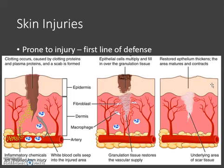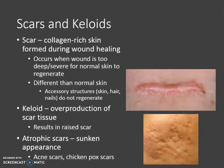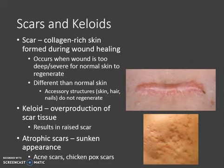Other times the scar is visible through the epithelium because the epithelium isn't able to fill in that area, and what you're actually seeing is the granulation tissue or scar tissue underneath. A scar is that collagen-rich skin — the connective tissue and granulation tissue formed as a wound heals. You'll notice it when a wound is too deep or severe for normal skin to regenerate, and scars act differently than normal skin because they lose the functions of the epidermis.